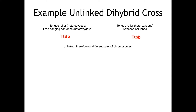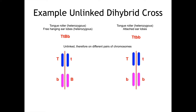Since these genes are unlinked, they are on different pairs of chromosomes. I strongly encourage you, when doing dihybrid crosses, to draw a diagram like this so you can really visualize where the genes are. On the left hand side, the gene for tongue rolling is on the top pair of chromosomes — dominant allele uppercase T on the left, recessive lowercase T on the right. On the second pair, the other pair because they are unlinked, you have lowercase B on the left and uppercase B on the right — though that arrangement doesn't necessarily have to be the case, and we'll come back to that in a moment.